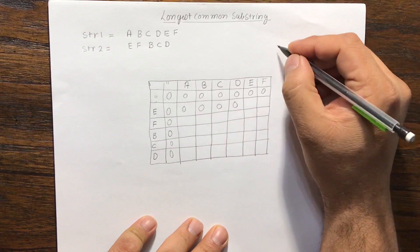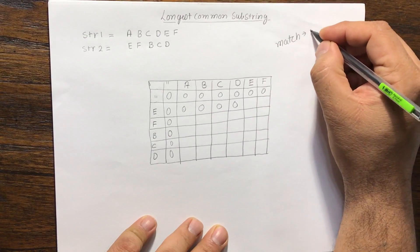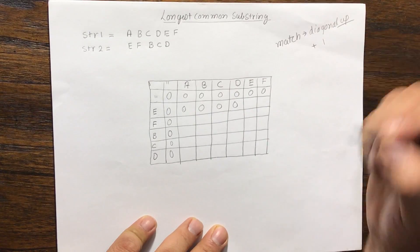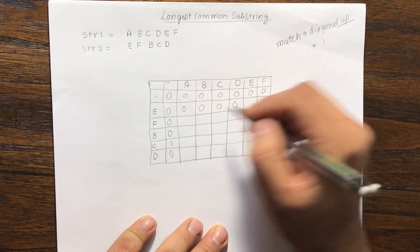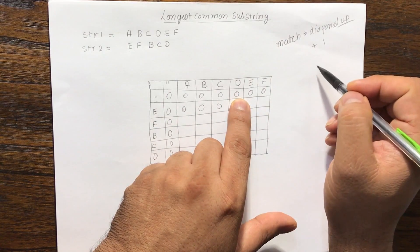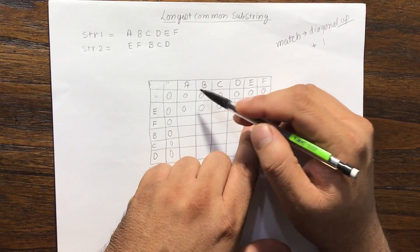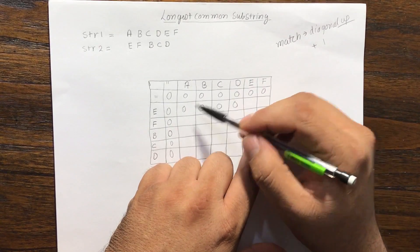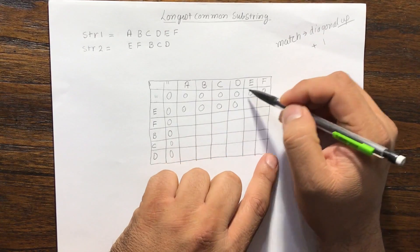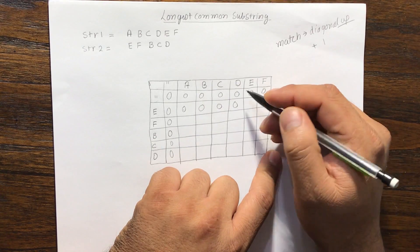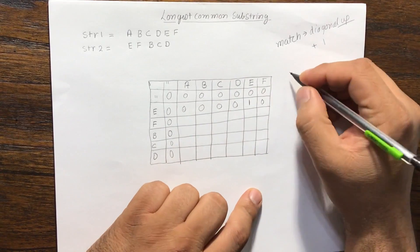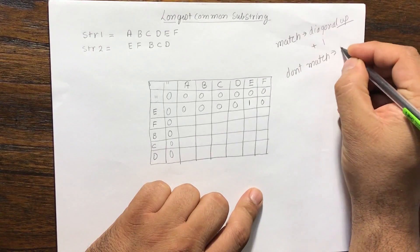E and e match. When they match, what we do is we go diagonally up and add 1 to it. Why? Because e and e matched, and the diagonal up value represents the common substring before this match. The value diagonally up is 0, so 0 plus 1 equals 1. This means the common substring before these e's was 0, and now that they've matched, this becomes 1. E and f don't match, so we put a 0. If they don't match, we put a 0.